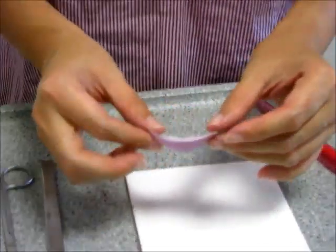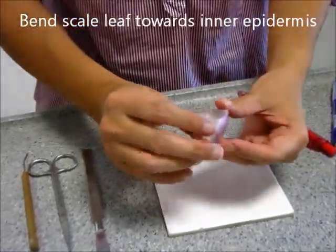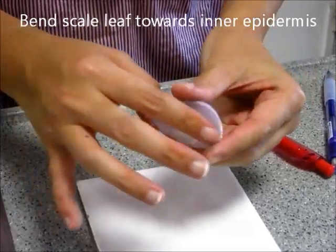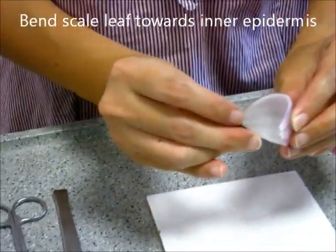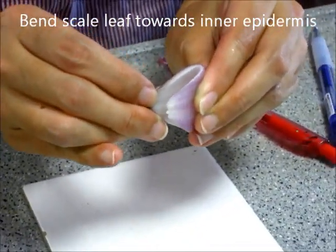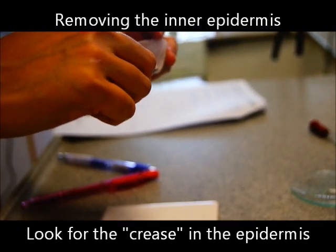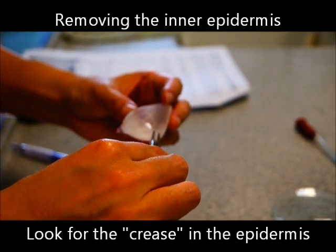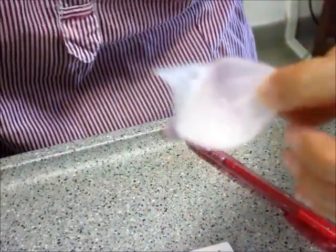First, we need to get this scale leaf of onion and we need to bend it towards the inner epidermis. Now, to tell where is the inner epidermis, there's one side that is more purple and more dry and there's another side that is more sticky and it's concave, right? So this is the inner epidermis and we bend the scale leaf towards the inner epidermis. So you hear this crunching sound. After you have bent the onion scale leaf, you will be able to see that now there's a little crease where you have bent it. And then if you peel the epidermis from the side, you will be able to remove quite a large piece.